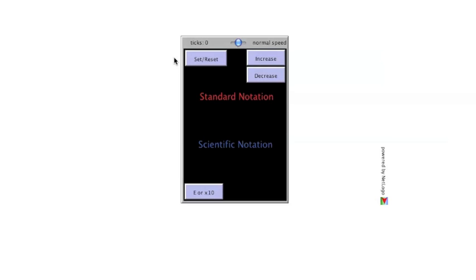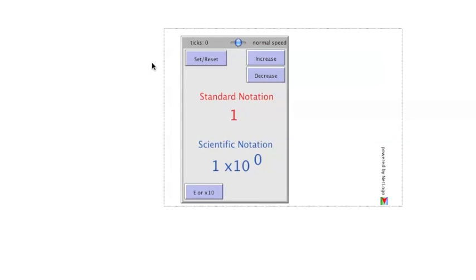A link to the illustration can be found in the video description. The illustration is initialized by clicking the Set Reset button. Once initialized, the main window shows a number in Standard Notation in red and the same number in Scientific Notation in blue. The initial value is one, which in Scientific Notation is one times ten to the zero.